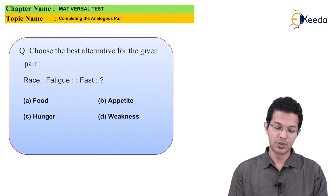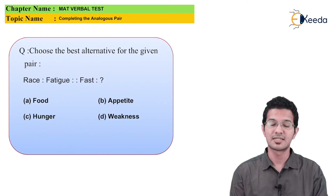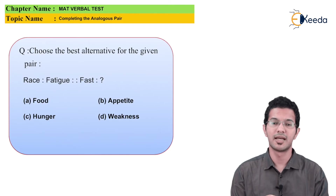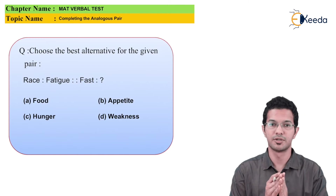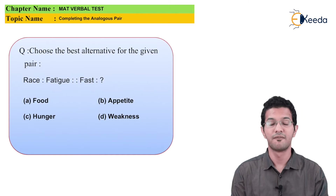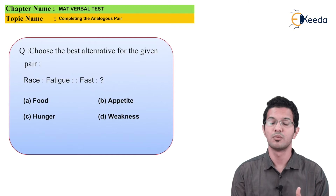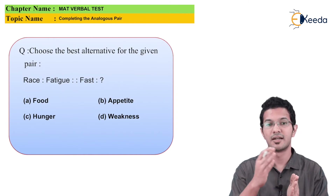The first question says: choose the best alternative from the given pair. Race is related to fatigue. Hence, fast is related to what? Now students, we will look at the first pair's relationship. The first pair says race is related to fatigue. When we run a race, we feel fatigue — the first word is related to the second.